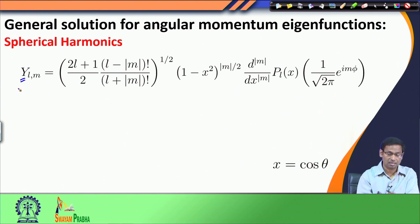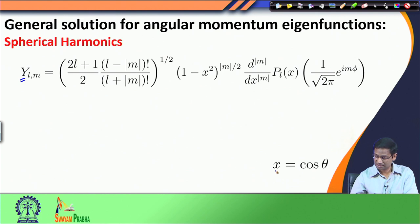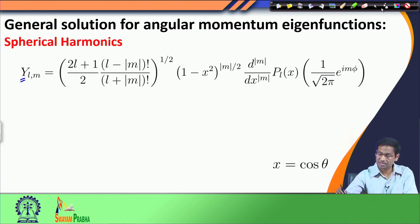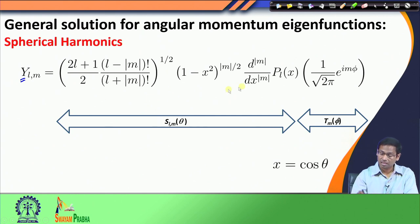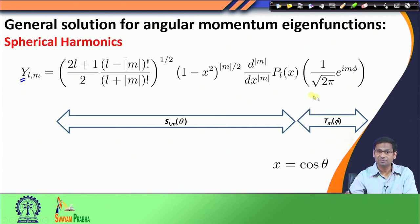The general form has some l,m terms, a factor of (1 minus x^2) where x is defined as cos(theta), then some associated Legendre function, and then e^(i*m*phi). We can see that the first few terms have only theta dependence — this is the S(theta) part. If you recall, we defined our angular momentum eigenfunction as a product of two functions: S(theta) and T(phi).